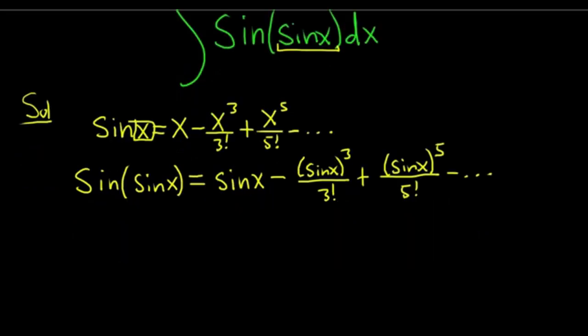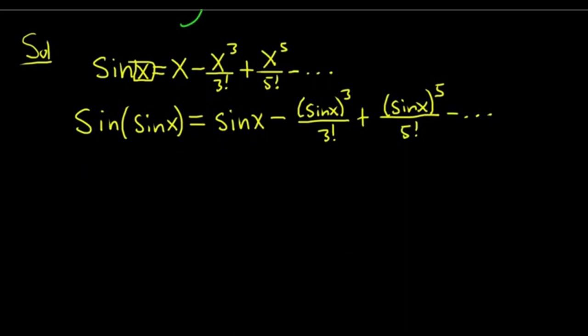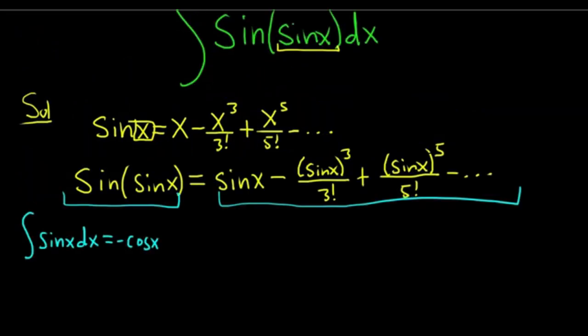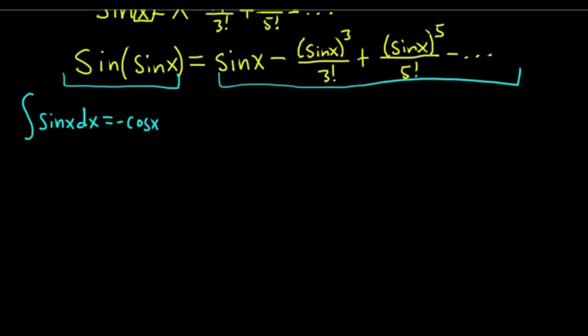Now we just have to integrate each of these pieces. Let's start by integrating the sine function. The integral of sine x with respect to x — you ask yourself, what function has sine as its derivative? Since the derivative of cosine is negative sine, the integral of sine x is just negative cosine x. Basically we're integrating both sides of this equation, integrating each term one by one.